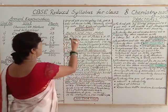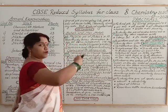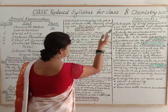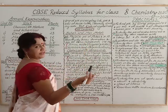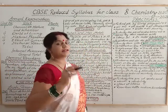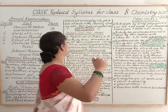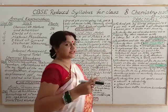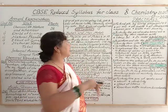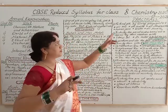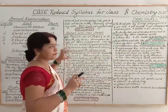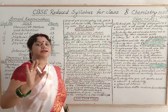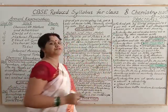Now, what has changed? Physical and chemical properties of metals and non-metals, reactivity series, and formation and properties of ionic compounds — these are retained. But basic metallurgical processes and corrosion and its prevention have been omitted and deleted for the session 2020-21. These correspond to NCERT pages 49 to 54.